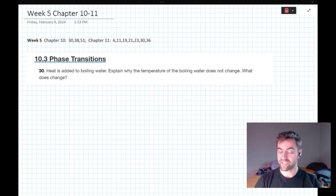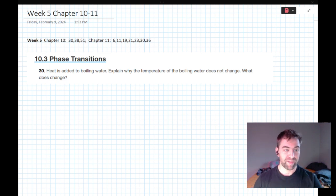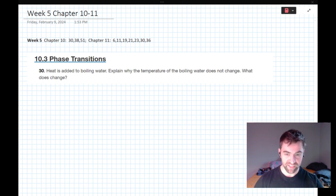All right, good evening. My name is Hunter and this is content review for general chemistry students. Tonight we're going over chapters 10 and into 11, starting with phase transitions. We've already looked at some of these concepts in the previous week. We're just going to be getting a little bit more focused here into change states and calculating energy and calculating changes in temperature. First, a conceptual question: heat is added to boiling water. Explain why the temperature of the boiling water does not change. What does change?